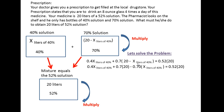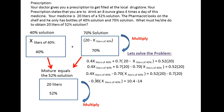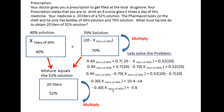We get 0.4x plus 0.7 times (20 minus x) equals 0.52 times 20. We move the constant term (0.7 times 20) to the right side, leaving the x terms on the left. This gives us negative 0.3 times x equals 10.4 minus 14, which simplifies to negative 0.3 times x equals negative 3.6.